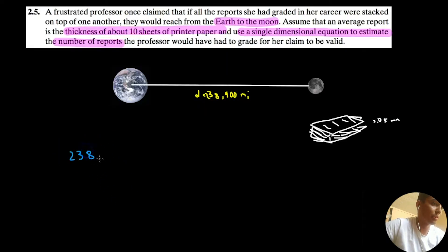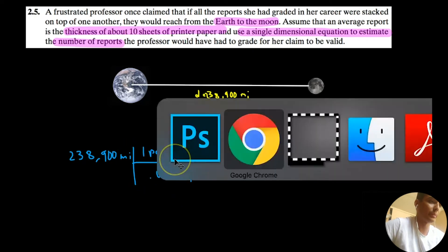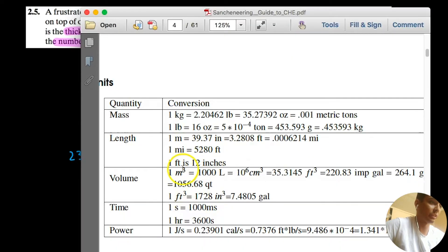Game plan: we gotta figure out how much paper there would be if we stacked up a bunch of papers, and then divided by 10. That would be the number of reports. So not too bad. 238,900 miles. So we know that one page is 0.05 millimeters thick. All we gotta do is convert miles to millimeters.